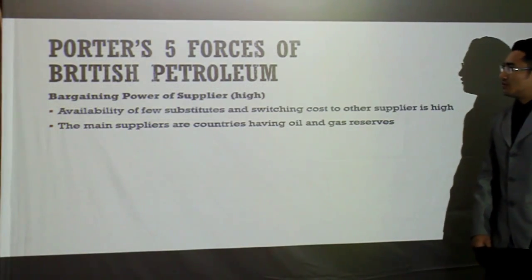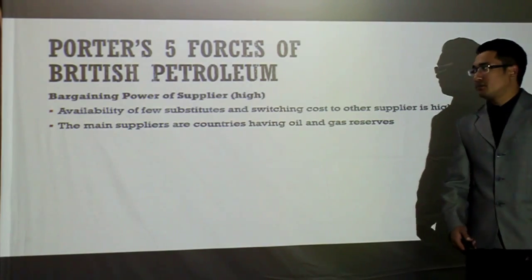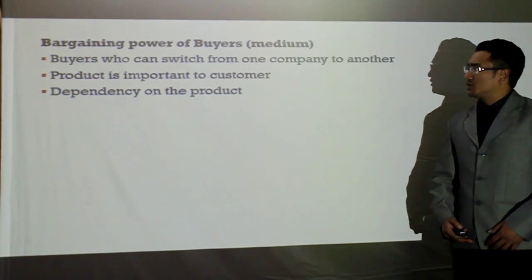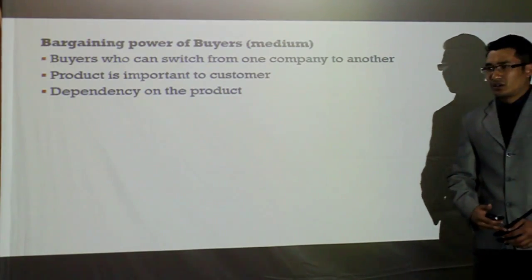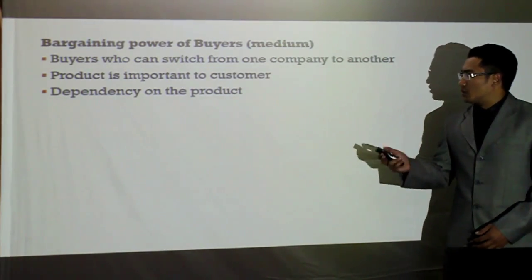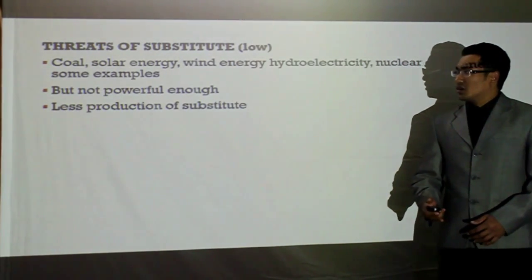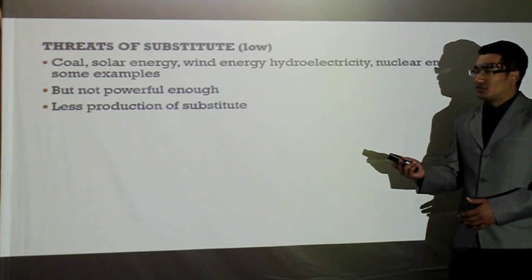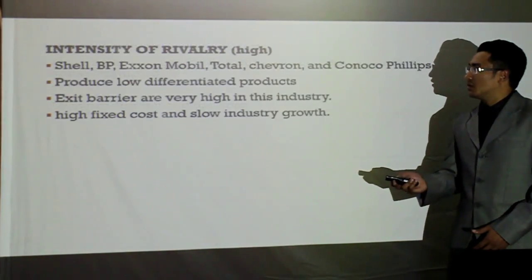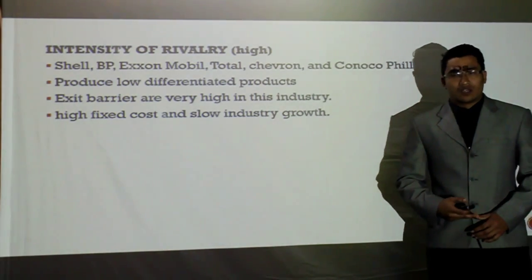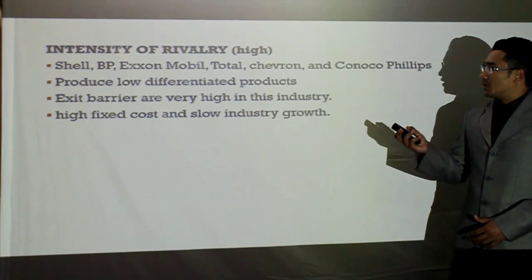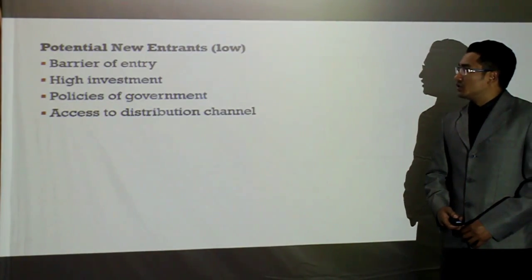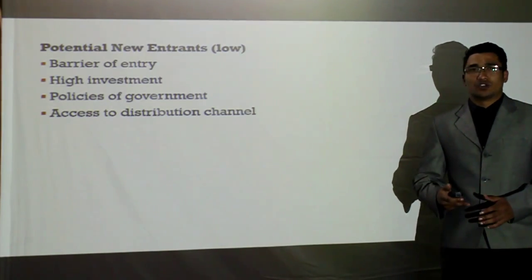Looking at Porter's Five Forces of British Petroleum: bargaining power of supplier is high because there are fewer substitute products in the market. Bargaining power of buyer is medium because buyers can switch from one company to another and there is customer dependency on the product. Threat of substitutes is low because other energies are not powerful enough and almost all of these energies are produced by BP itself. Intensity of rivalry is high because companies like Shell, Exxon, and Total compete for the same market. Potential of new entrants is low because of high investment and many barriers to entry.